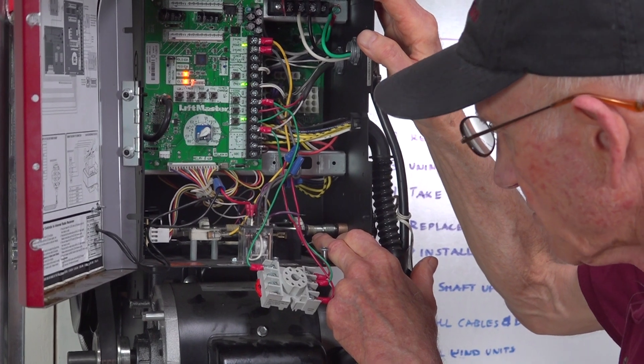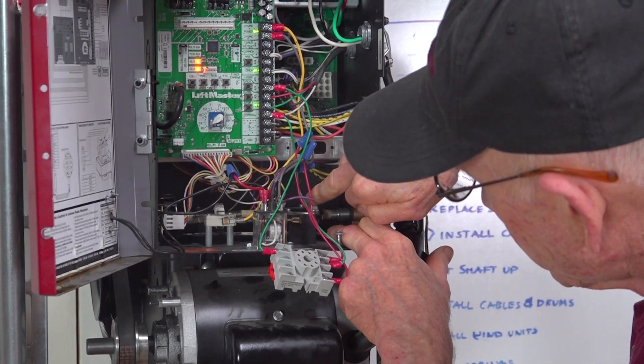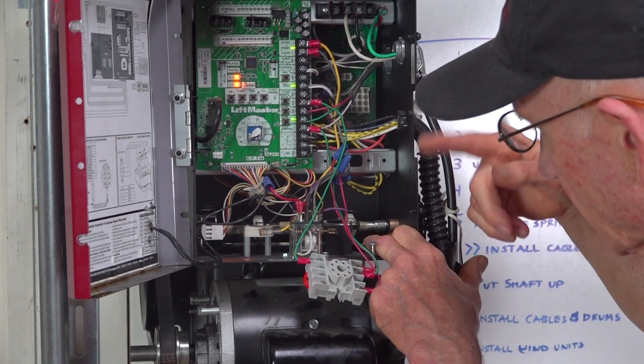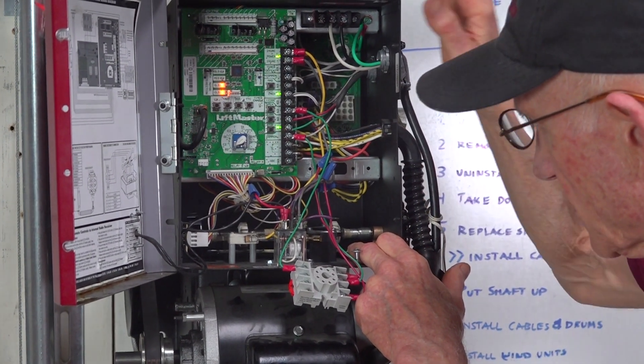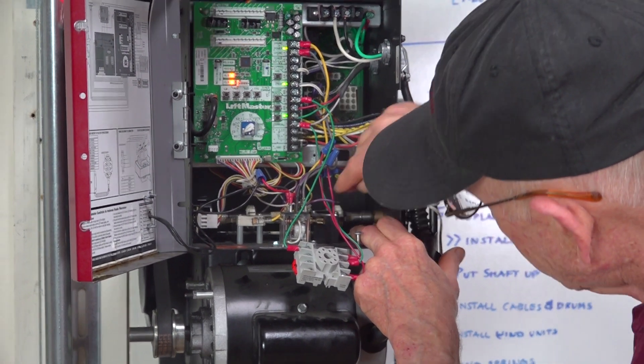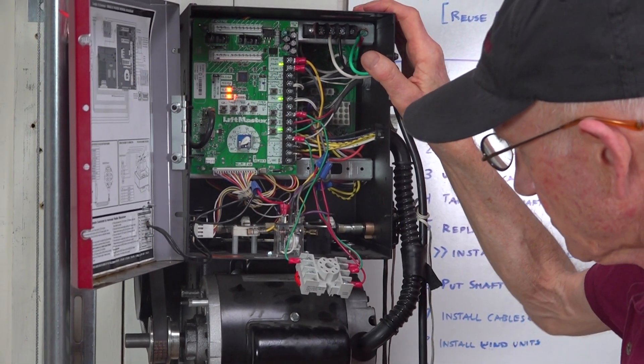So, to adjust the travel or the limit, you can move the nut away from the switch so that it will travel further, or move it toward the switch so that it will not travel as much.